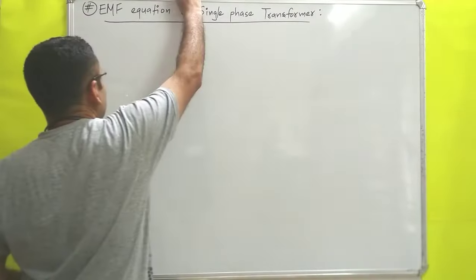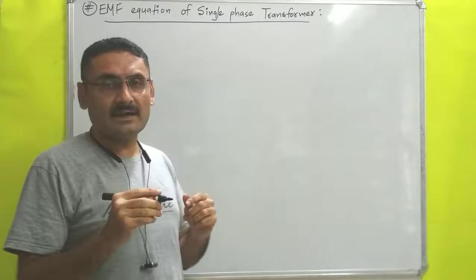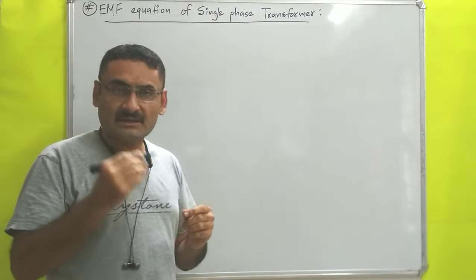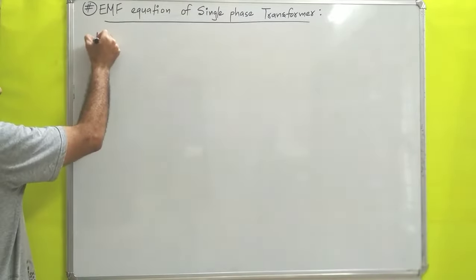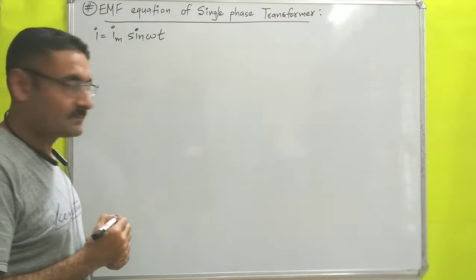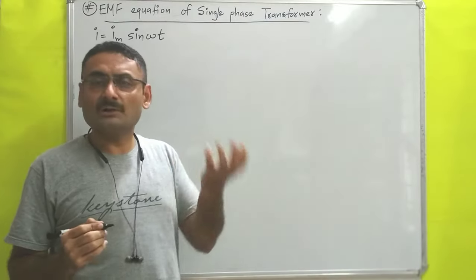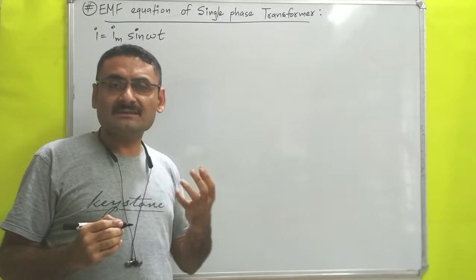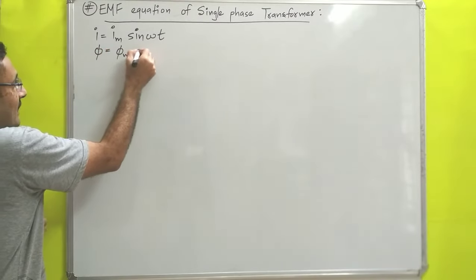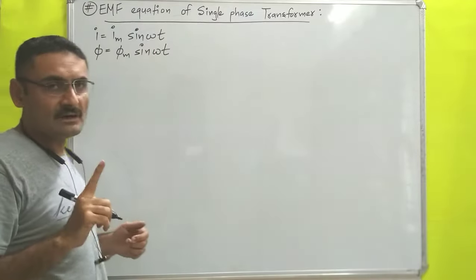In the case of a transformer, we are supplying alternating current to the primary winding. That alternating current is variable and changes as per the equation I = Im sin(ωt). Due to this change in current, the magnetic field lines also change, and the flux changes according to the equation φ = φm sin(ωt), where φm is the maximum flux and ω is the angular frequency.